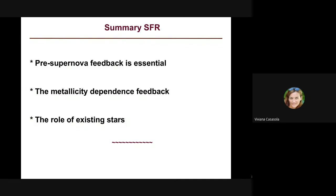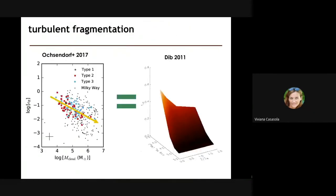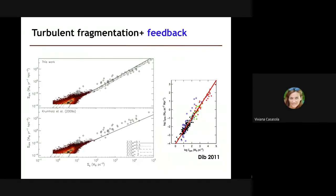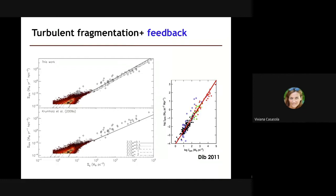Another question about the slope of the Kennicutt-Schmidt fit shown with integrated galaxy data: it is not exactly 1.4 but very close, around 1.5 or so.